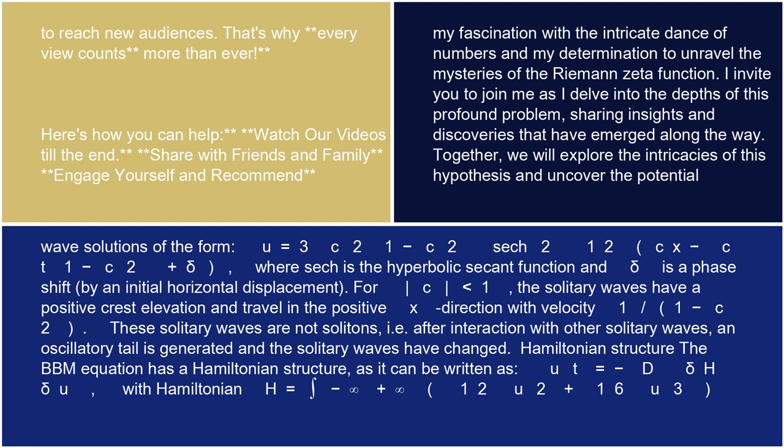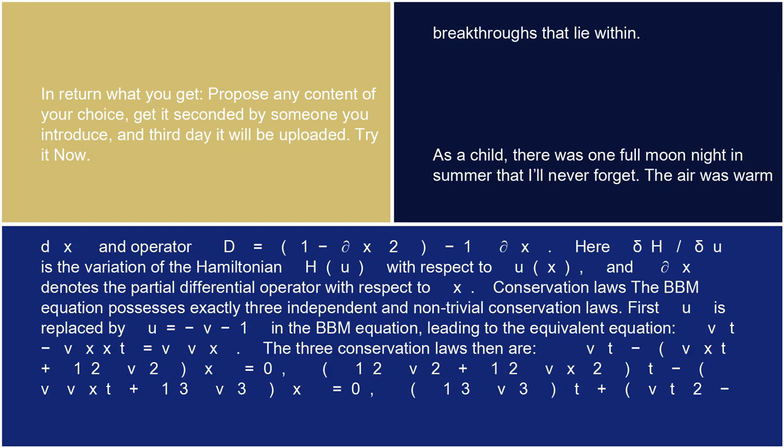Hamiltonian structure: The BBM equation has a Hamiltonian structure, as it can be written as ut = -D δH/δu, with Hamiltonian H = ∫[-∞,+∞] (1/2·u² + 1/6·u³) dx and operator D = (1 - ∂x²)⁻¹∂x.